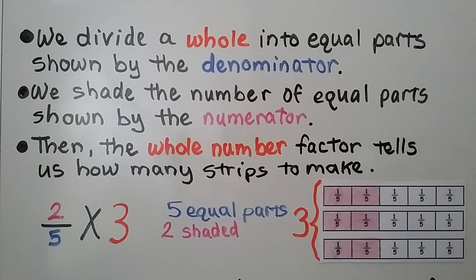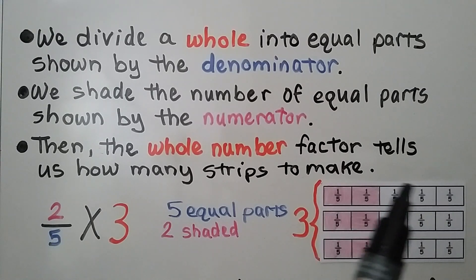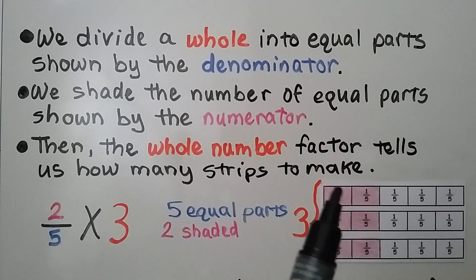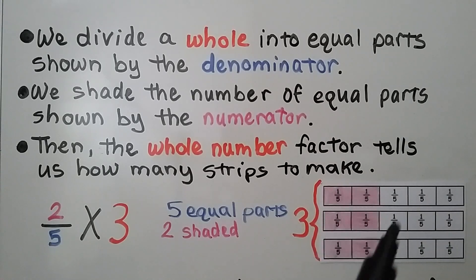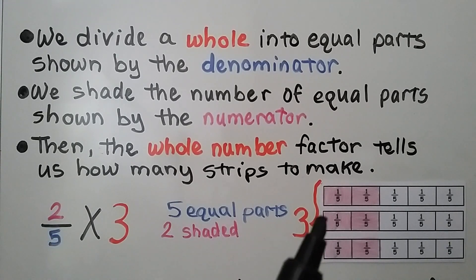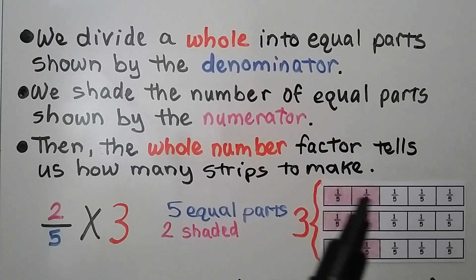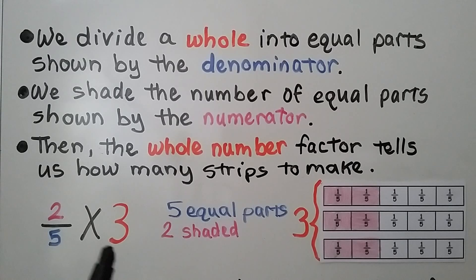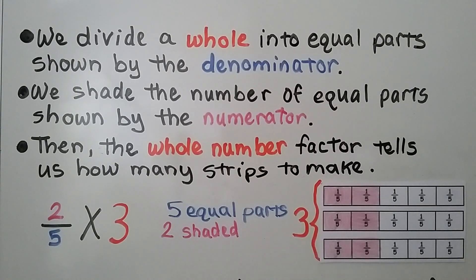We divide a whole into equal parts shown by the denominator. So our denominator is 5, meaning one of our whole strips is going to be divided into 5 equal parts — they all will be. We shade the number of equal parts shown by the numerator. We have a 2, so there's going to be 2 parts shaded in each strip. Then the whole number, this 3 factor, tells us how many strips to make. We have 5 equal parts, 2 are shaded, and we have 3 of them.